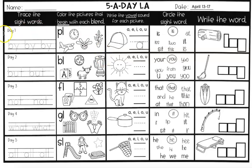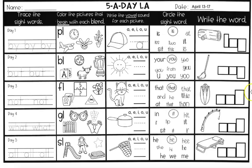You're going to do five each day, going from left to right — just like how you read a book — for each of the five days. This is the five-a-day reading language arts, and this is for April 13th through the 17th. I'm going to walk you through this.